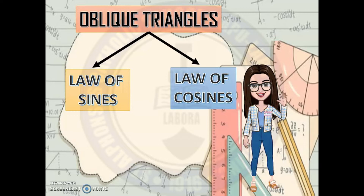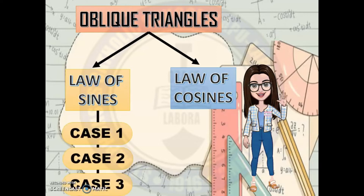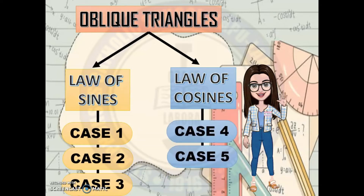There are five cases — Case 1 to 5. For Cases 1 to 3, you must use the Law of Sines in solving these problems. While for Cases 4 to 5, you will use the Law of Cosines. Now, we're going to learn what givens are classified as Cases 1, 2, and 3, and what cases are considered Cases 4 and 5.